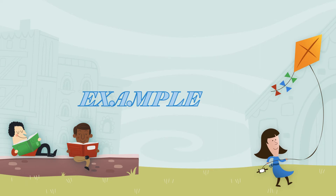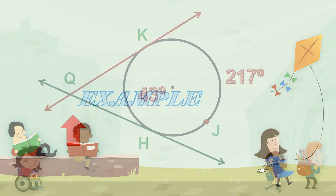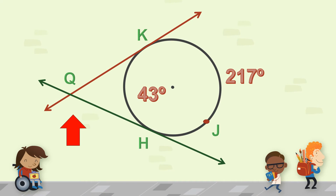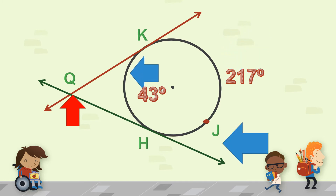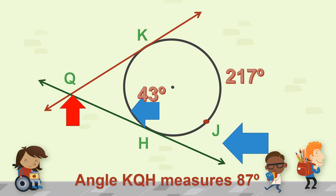Let's go to an example. What is the measure of angle KQH, knowing that the measure of the bigger arc KJH is 270 degrees and arc KH is 43 degrees? Get the positive difference: 217 degrees minus 43 degrees, then divide that by two. The measure of angle KQH is 87 degrees.